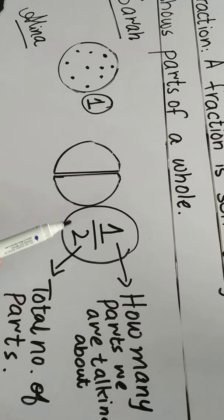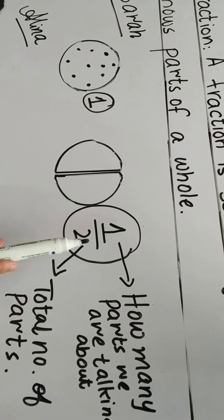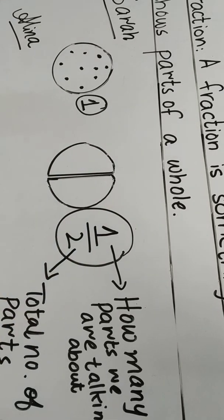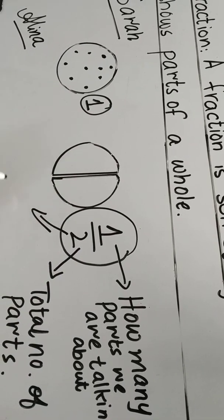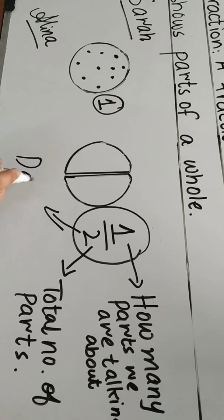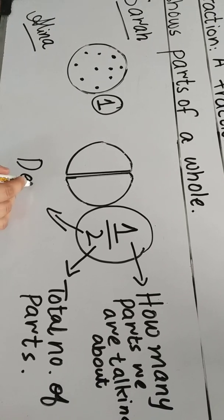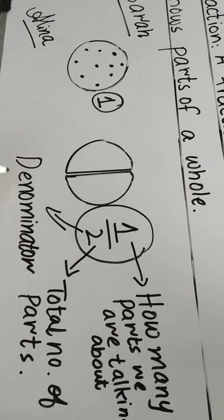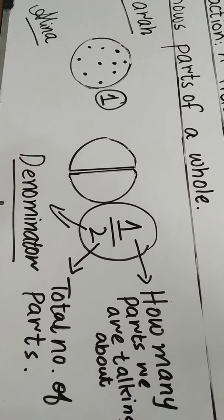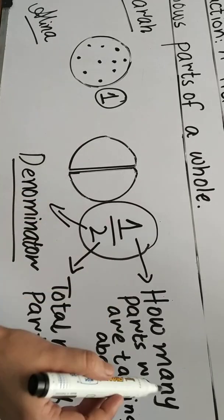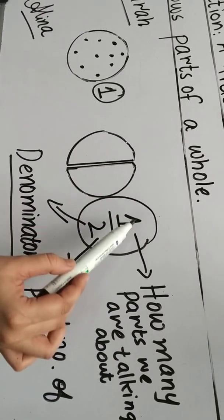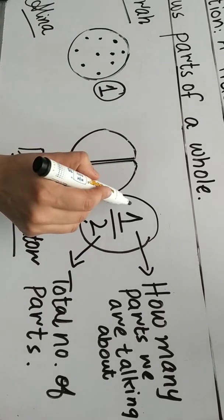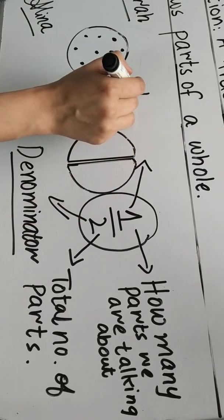As a fraction, we will write one by two. The downward part of the fraction we will call the denominator. And how many parts we are talking about — the total number of parts — that is the numerator.